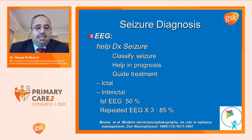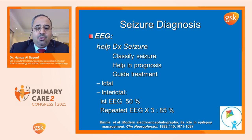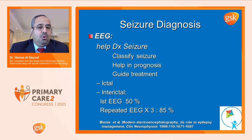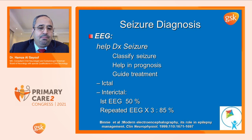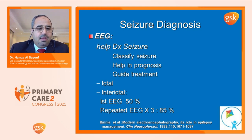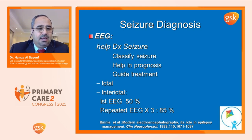There are two types of EEG: ictal — while the patient is seizing, which is rare and is the gold standard — and interictal, between attacks. If I do the first EEG in a patient with epilepsy, my chance of getting an abnormal result is 50%. If I repeat up to three EEGs, my chance rises to 85%. But EEG is a supportive diagnostic tool — it does not tell me where to go alone. If you are practicing somewhere without an EEG machine and see a kid having seizures, would you treat him? Of course — because epilepsy is a clinical diagnosis.